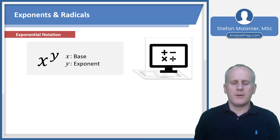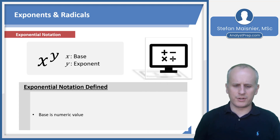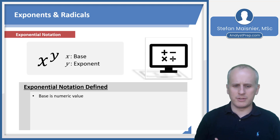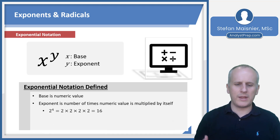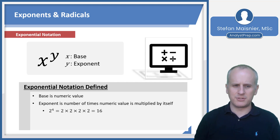When you have exponential notation, you have two parts: your base, which is the big number, and your exponent, which is the small number that goes up to the right of the base. The base is your numeric value — in most cases an integer — being raised to some exponent, and the exponent is the number of times that value is multiplied by itself. For instance, two to the fourth power means two times itself four times: 2×2×2×2 = 16.